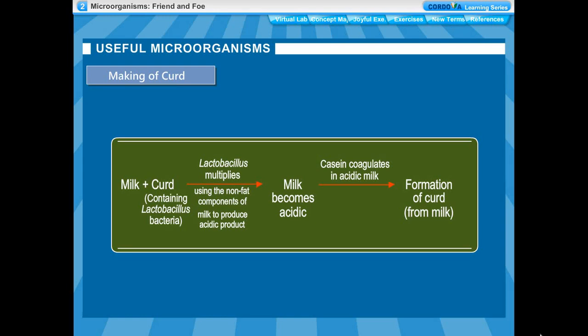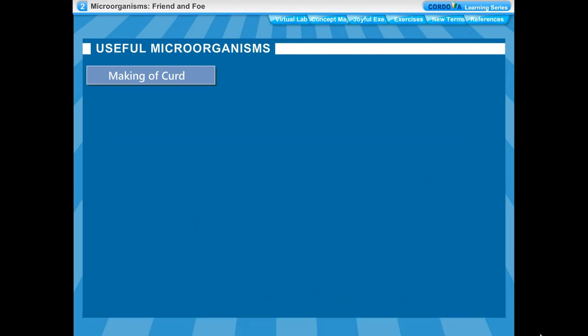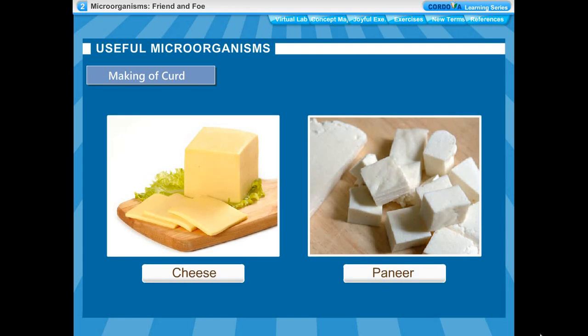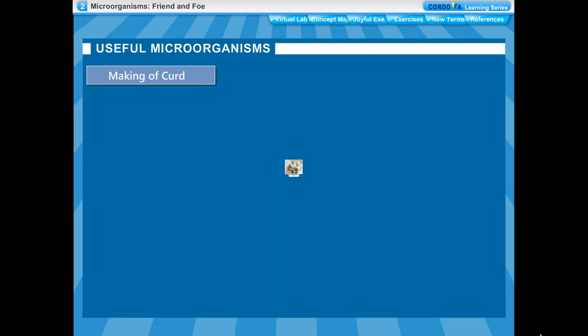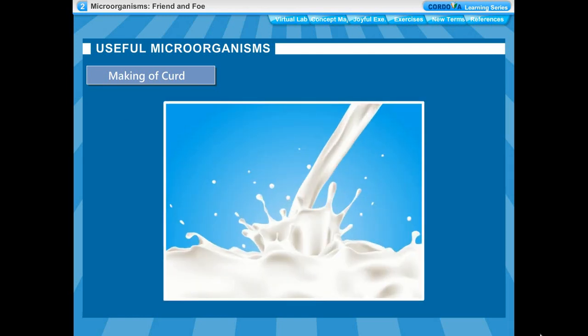Casein coagulation and clump formation takes place only when the milk is acidic. A spoonful of curd contains the bacteria Lactobacillus, which promotes the formation of curd from milk. Cheese and paneer are also made by the action of bacteria on milk.